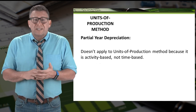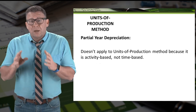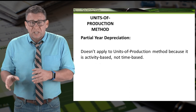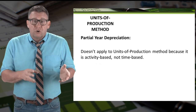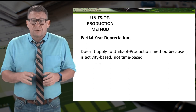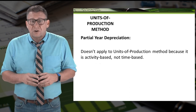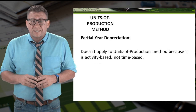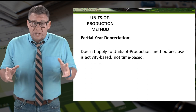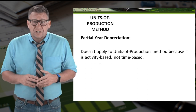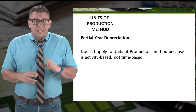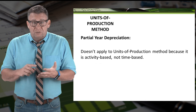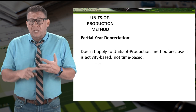So it doesn't matter when the Pixies put the bus into service. If they drove 60,000 miles in the year, then depreciation expense is $48,000. It doesn't matter if they started driving in January, July, or December.